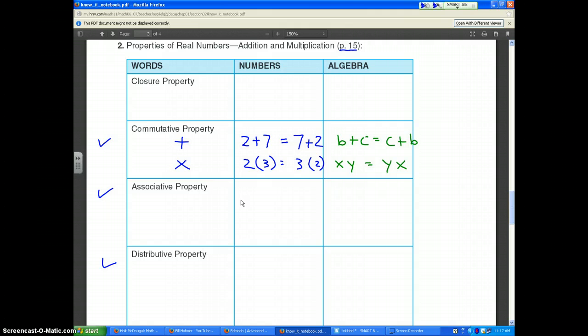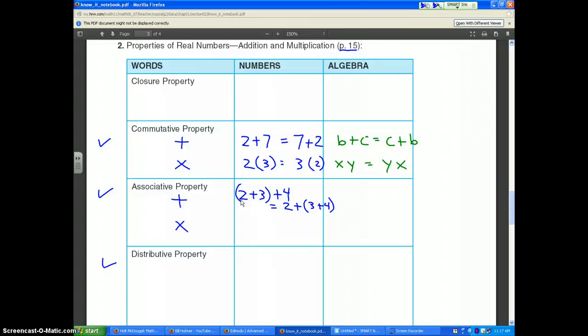The associative property also works for addition and multiplication. The associative property says you can take three numbers. For instance, if I have (2 plus 3) plus 4, I could switch those parentheses and add 3 and 4 together first, then add 2, and still get the same answer.